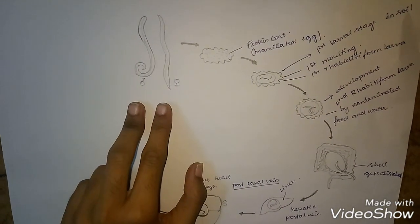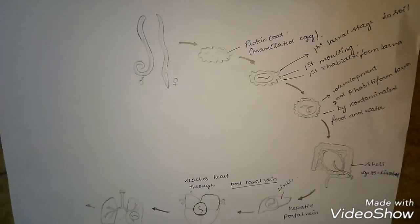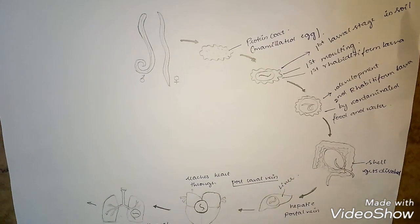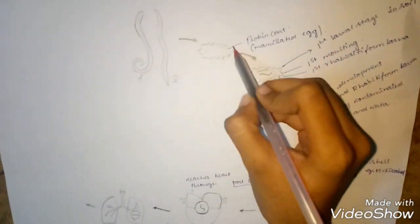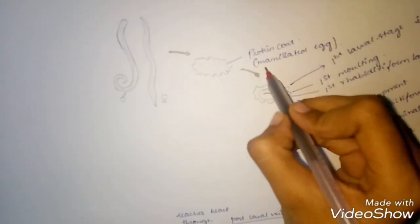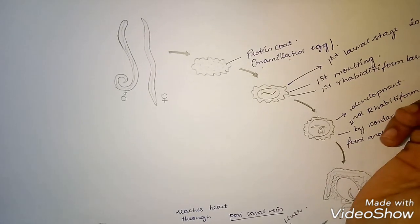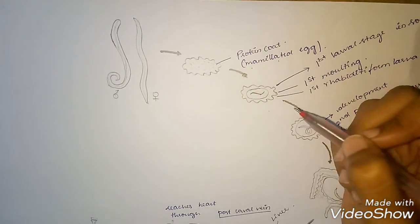After copulation, the female Ascaris releases up to 2 lakh eggs per day. Each egg contains a protein coat surrounding it, which is why it is known as a mammillated egg. These are released through fecal material.